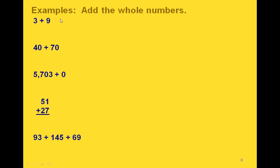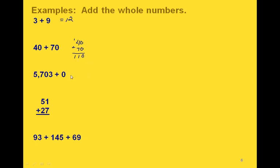Let's do some examples. First, we're just going to add 3 and 9, which will give us 12. Next, 40 plus 70 — I'm going to write these addition problems in column form. Notice how I'm lining up the 1's digits and the 10's digits. So 0 plus 0 is 0. And then when we add the 4 and the 7, we get 11. Since that's 10 or more, we write down the 1's unit and we carry the 10's unit into the next column. So here we add the 1 — we don't have anything to add it to, so we just bring the 1 down. Our answer is 110.